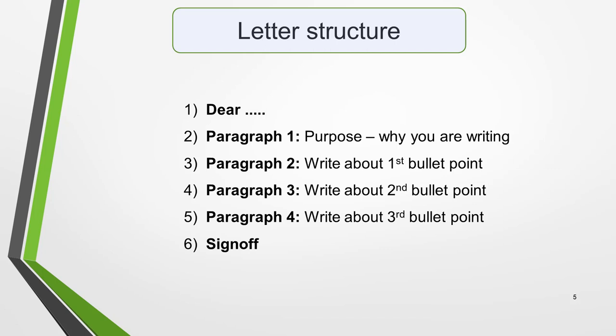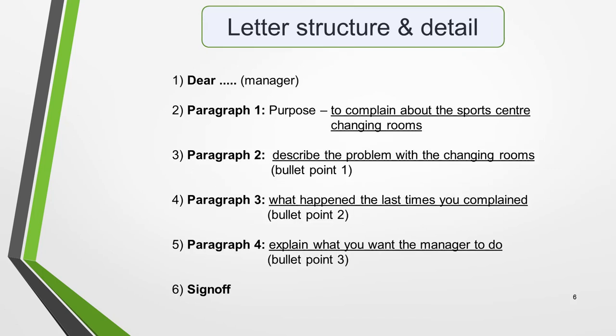All you need to do to create your plan is to add in the details from the question, like this. The person we are writing to is the manager, so this is who we'll address in our greeting. Paragraph one is the reason or purpose for writing, which is to complain about the sports centre changing rooms. Paragraph two covers bullet point one — describing the problem with the changing rooms. Paragraph three covers bullet point two — stating what happened the last time we complained. Paragraph four covers bullet point three — explaining what we want the manager to do. And finally, we'll sign off the letter.